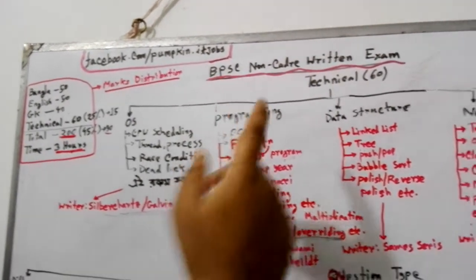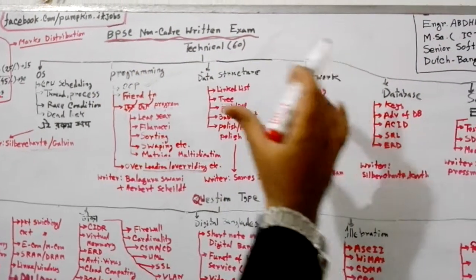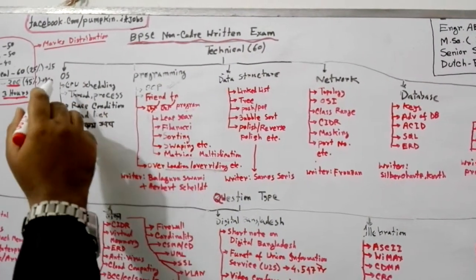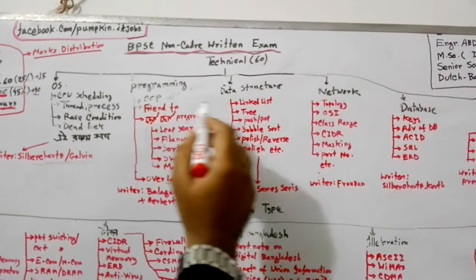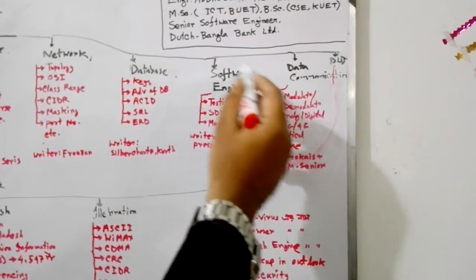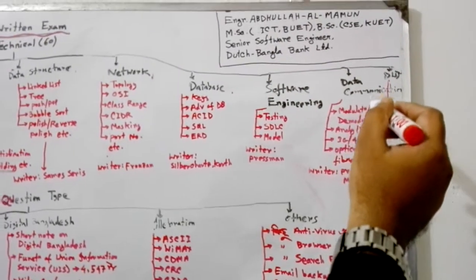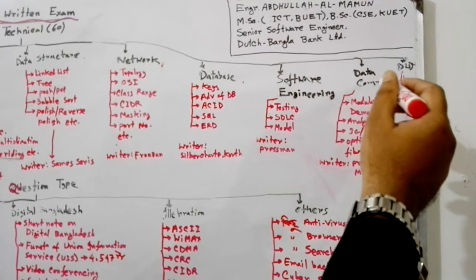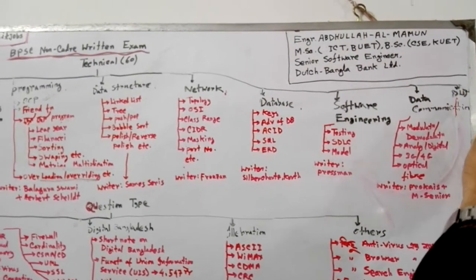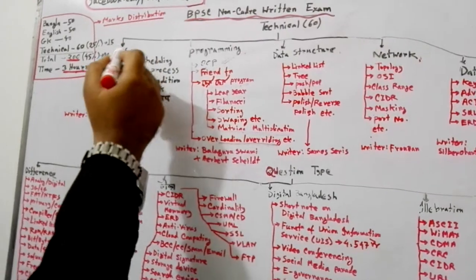BPSC has both a non-technical and a technical part. We should segregate these subjects: operating system, programming, data structure, computer network, database, software engineering, data communication, and digital logic design (DLD). Let's look at the subjects under these different topics.